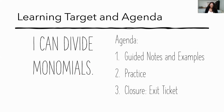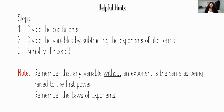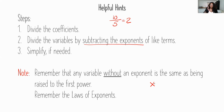As usual, we'll look at guided notes, some examples, and practice problems before finishing with the exit ticket. A couple of helpful hints: when dividing monomials, you divide the coefficients — just like 10 over 5 gives you 2. When dividing variables with exponents, you subtract the exponents, making sure they are like terms. Remember, a variable without a written exponent is assumed to be to the first power, and keep in mind the laws of exponents.